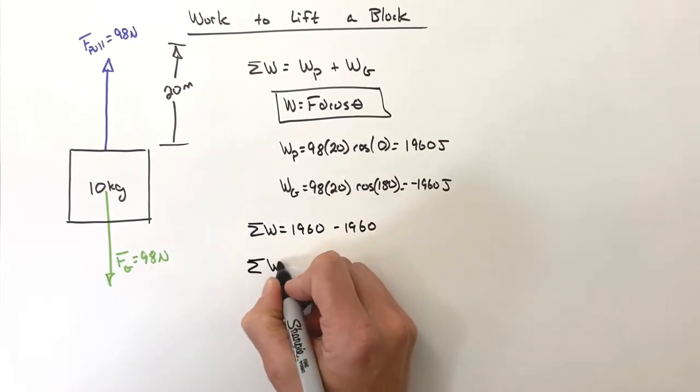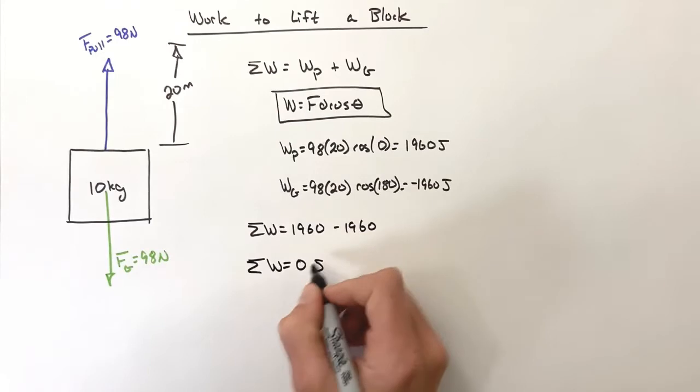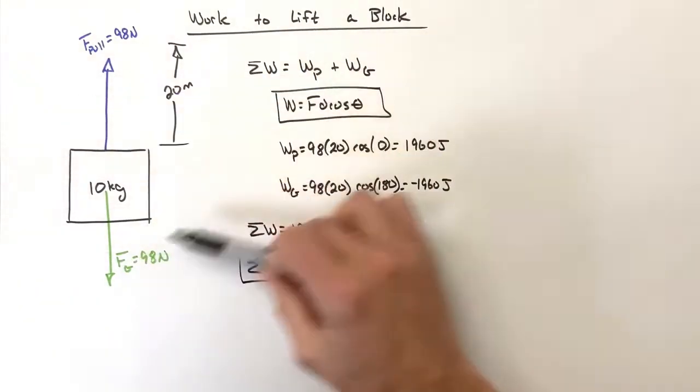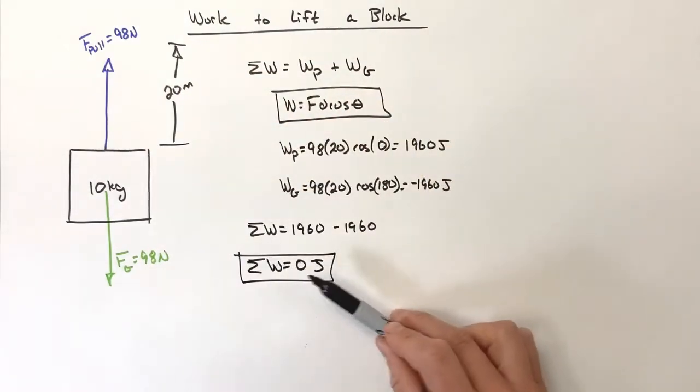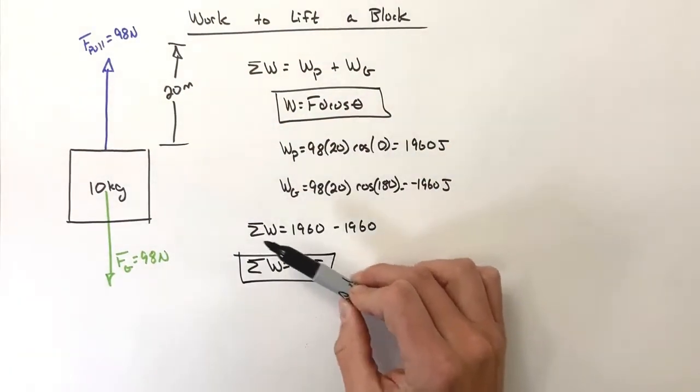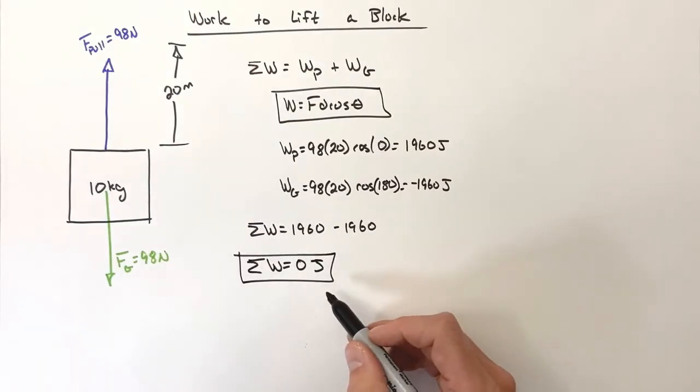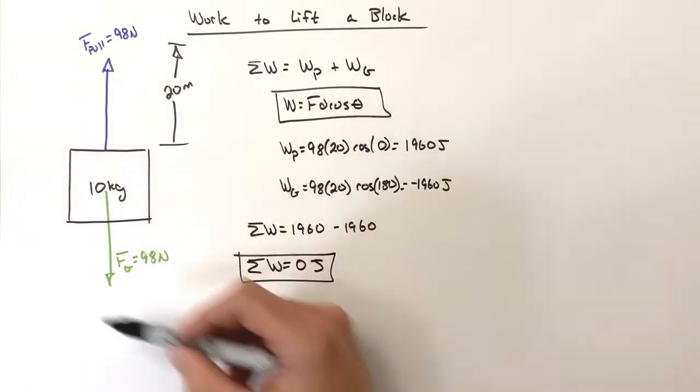So the sum of all works in this problem is going to work out to be zero joules. No work is done on the block, or no net work is done on the block. What this looks like and how this feeds into things we can actually calculate.